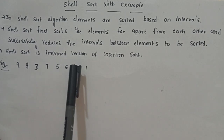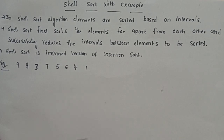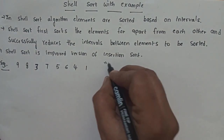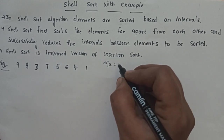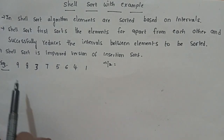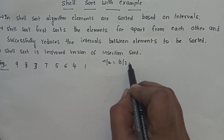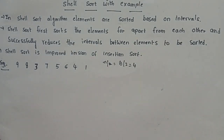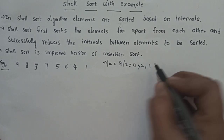Shell sort is an improved version of insertion sort. For the same array of elements, we need to select the intervals. Suppose the array size is n; we select n divided by 2. So with array size 8, the first interval is 8 divided by 2 equals 4. The next interval is 2, and the next is 1.